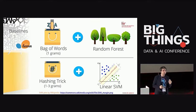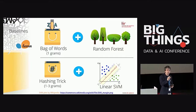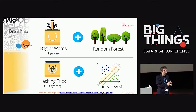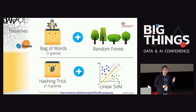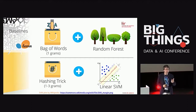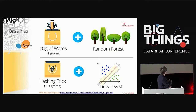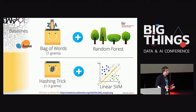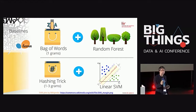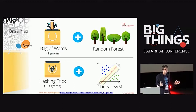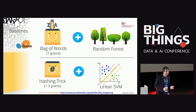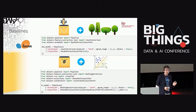Once you have that fixed-length feature vector, you can use a standard model like Random Forest. An improvement is to look at pairs or triplets of words together instead of each word independently — you can still use bag of words for that, but the binary vector grows very large. To handle this efficiently, use the hashing trick, which compresses the bag-of-words representation. For high-dimensional spaces, a linear SVM works better than Random Forest.